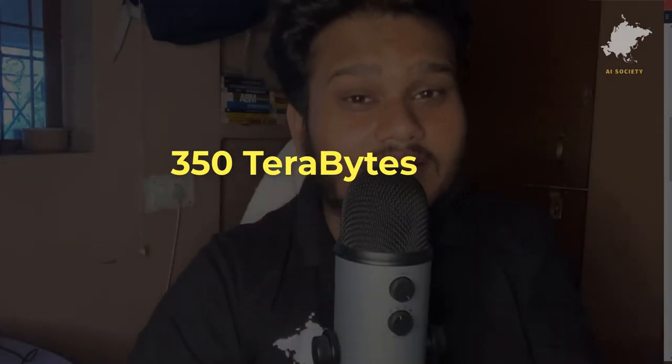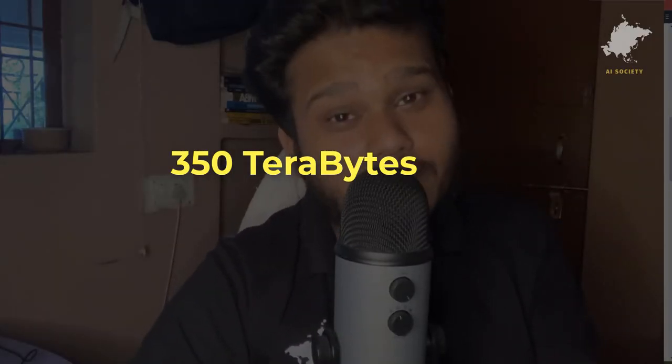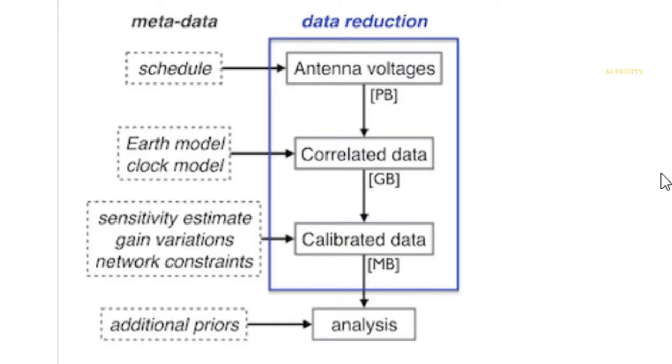EHT produces 350 terabytes of data, which makes preprocessing really difficult. On screen you can see how the EHT data preprocessing pipeline looks like. Now let's talk about the use of Python and its tools.